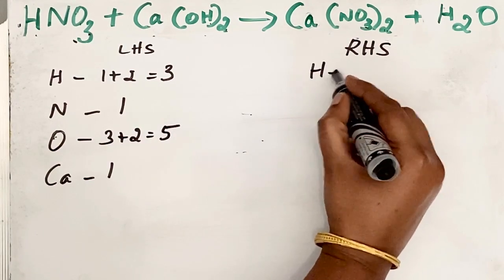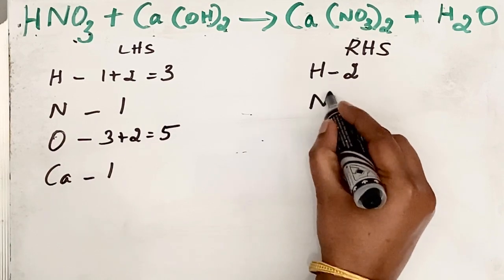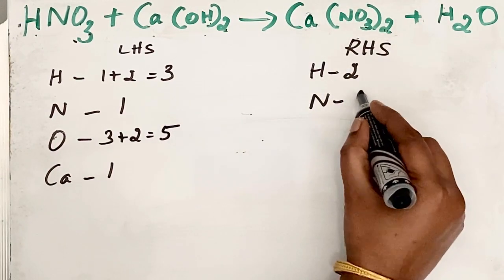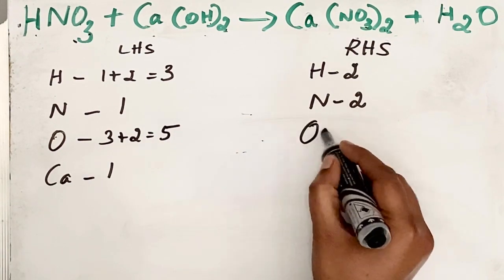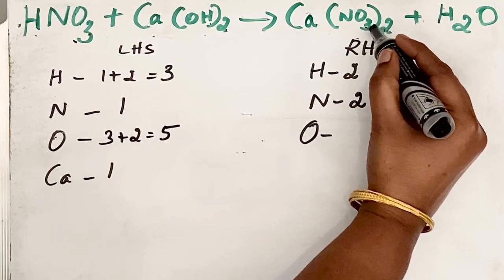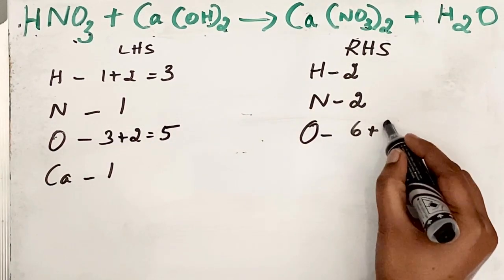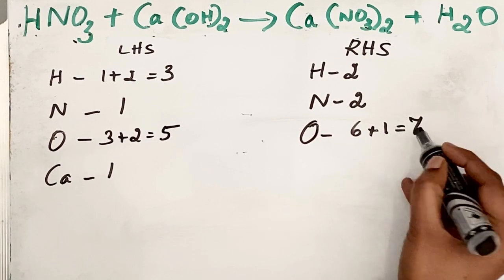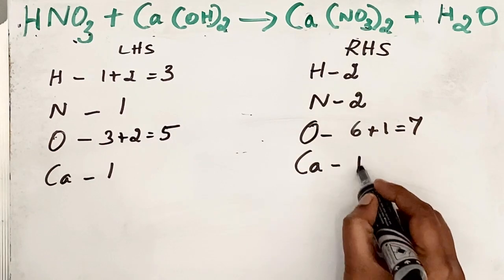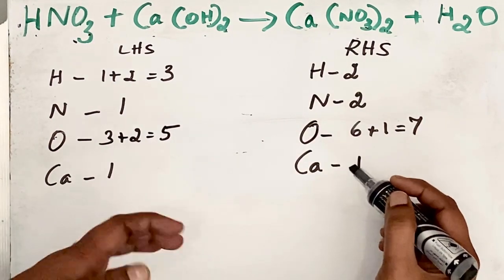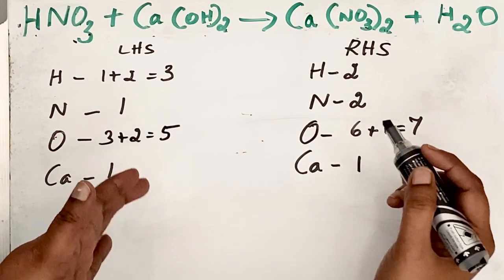Now let us write the right-hand side, following the same order. Hydrogen first: there are two hydrogen atoms. Next, nitrogen: there are two nitrogen atoms. Then oxygen: three times two gives six, plus one oxygen atom. So after writing the left-hand side and right-hand side atoms, now follow the tips.